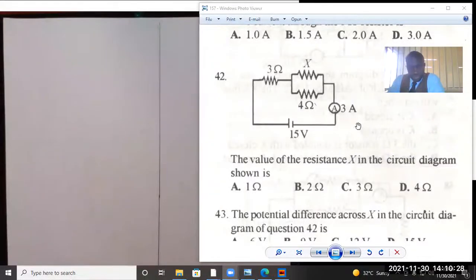Today I'm going to solve question 42. The question asks for the value of the resistance X in the circuit diagram shown. These two resistors, resistor X and the 4 ohm resistor, are in parallel. It's a 3 ohm resistor, we have an ammeter that reads 3 ampere, then we have the voltage source reading a value of 15 volts.